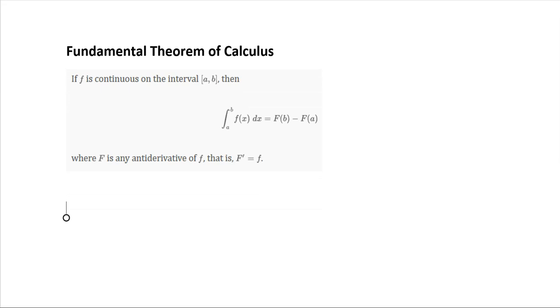So instead of doing all the limit definition stuff, what this means is that, say, we want to evaluate the integral from 2 to 5 of x squared dx. Then all we have to do is figure out the antiderivative for x squared, which is 1/3 x cubed.